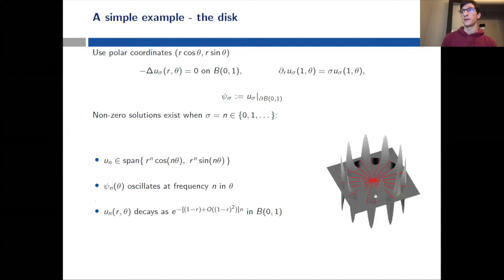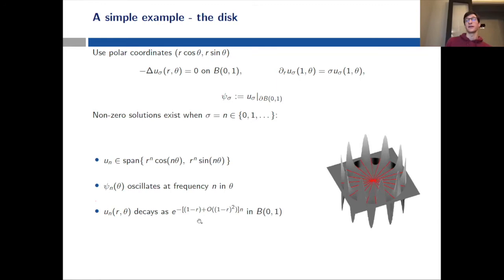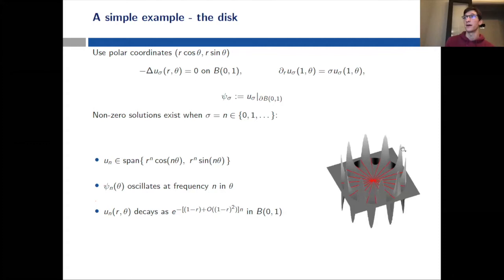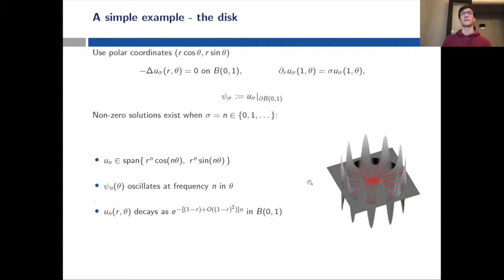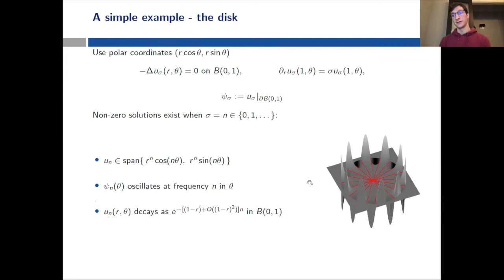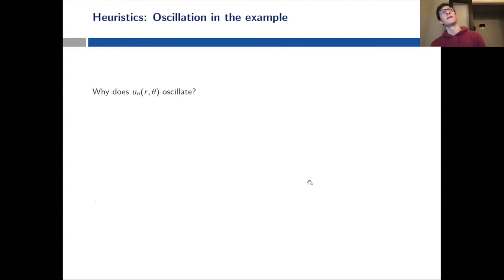I've drawn a picture of cosine nθ here. You can see that u_n decays like an exponential in n times the distance to the boundary — so walking in from the boundary towards the center you see an exponential function. I've also drawn the zero set of the eigenfunction on the disk. At least naively, oscillation should correspond to having a lot of nodal set. That's a heuristic I want to use, though of course nodal sets of Laplace eigenfunctions are a very deep problem.